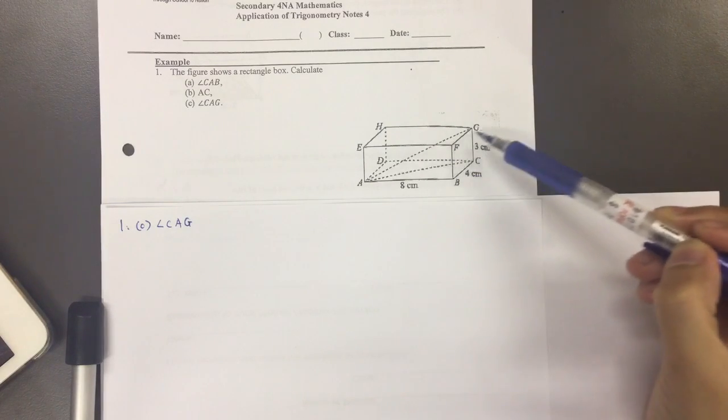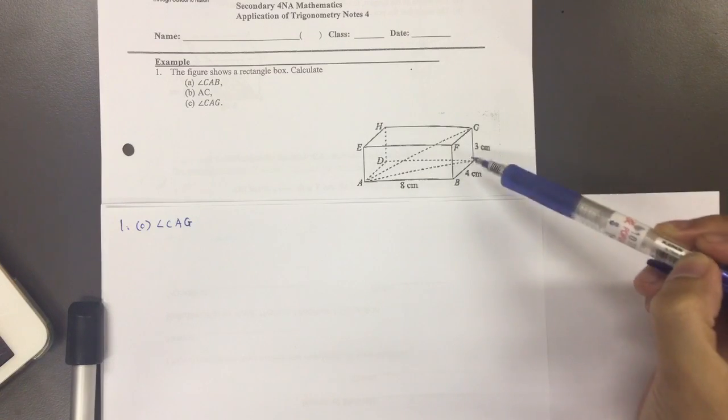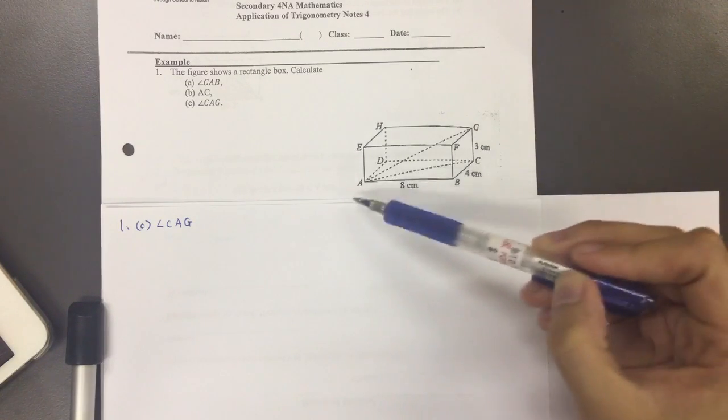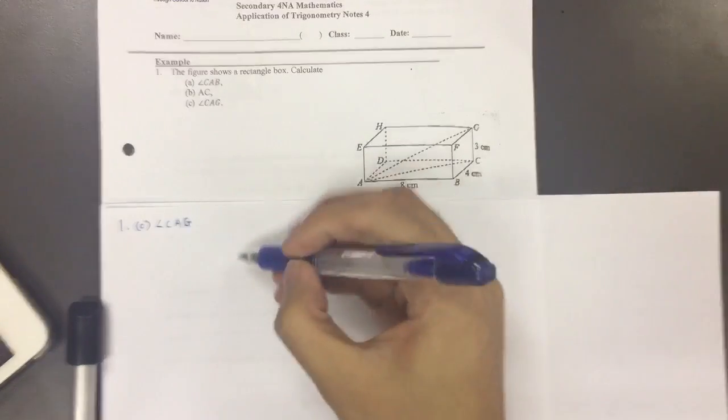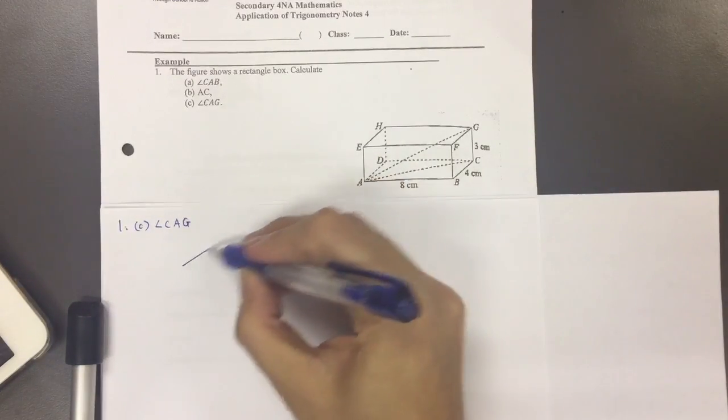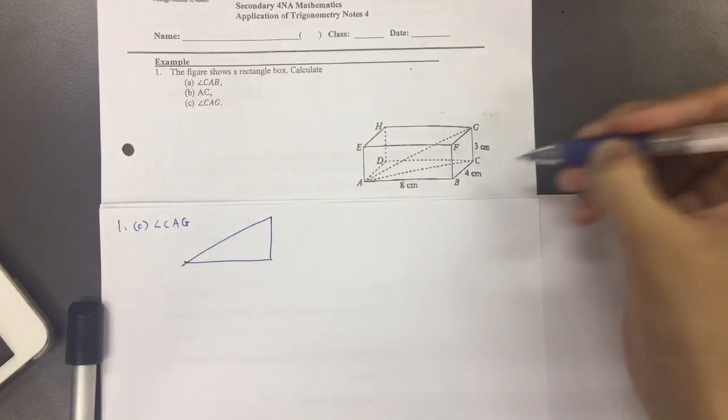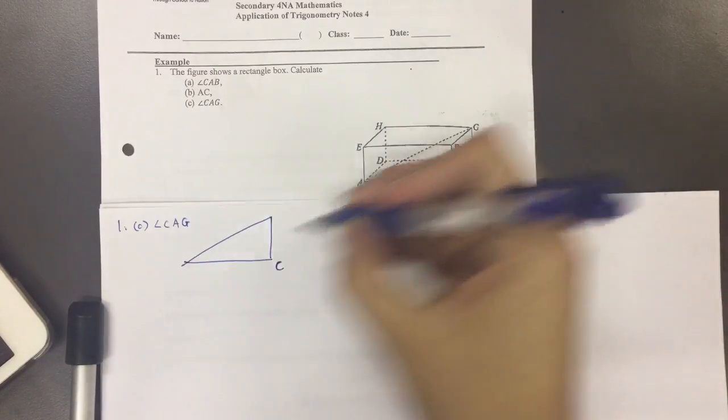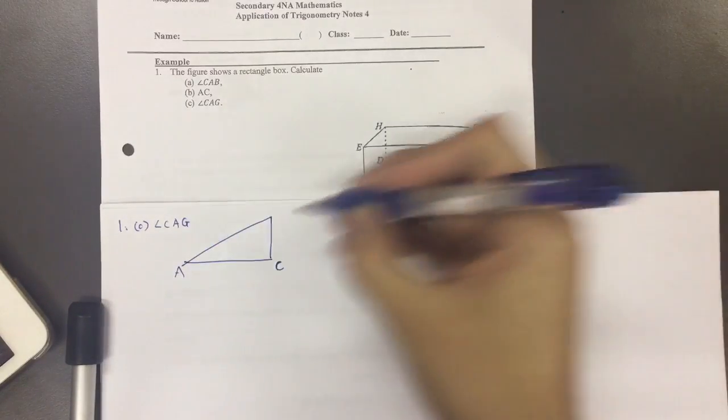You realize this is actually a triangle that cuts across the rectangular box. So can you imagine that there is going to be this triangle that is created where you have C to A going upwards to G.